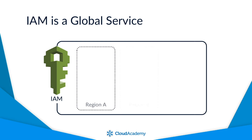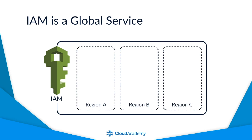Within AWS, some services are regional and some are global. IAM is a global service, meaning that you do not have to create different users or groups within each AWS region that you have resources. IAM covers all regions.